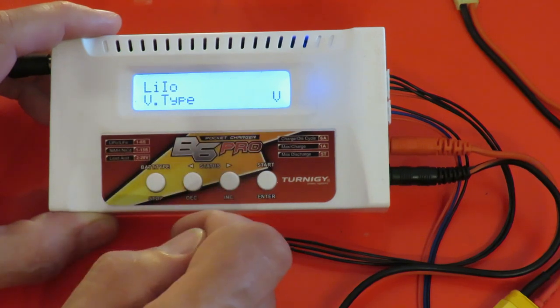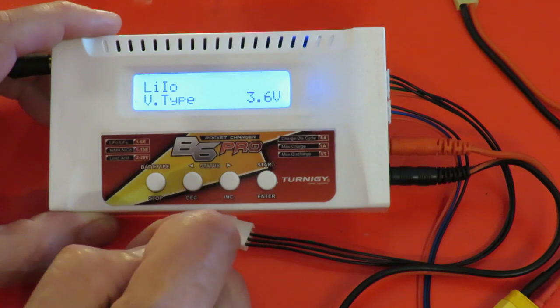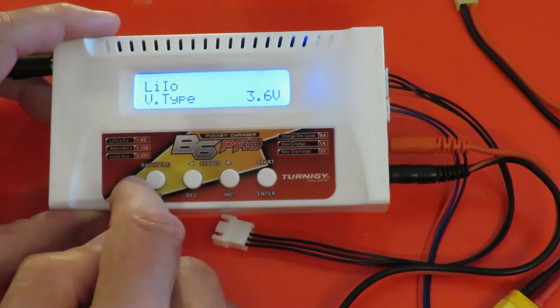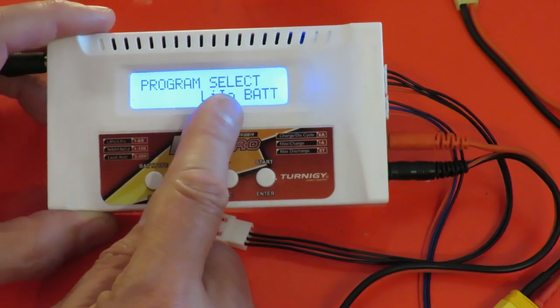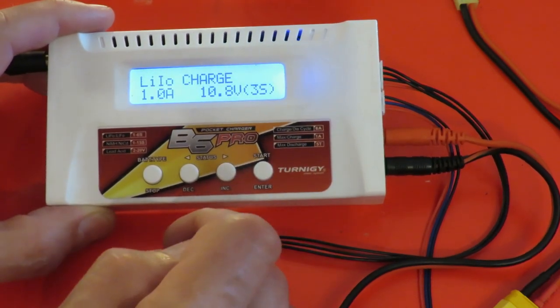Lithium-ion, 3.6 volts. Start that, then move back, back, back. Select lithium-ion battery. Start.